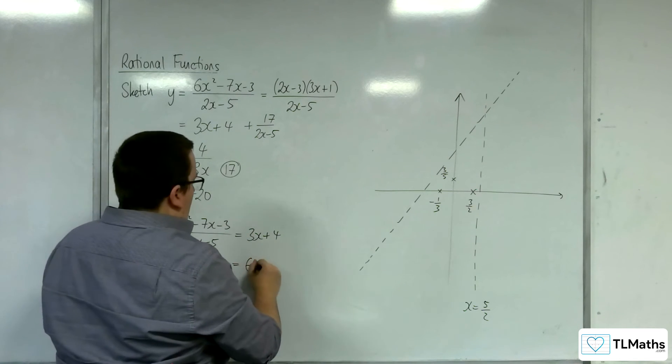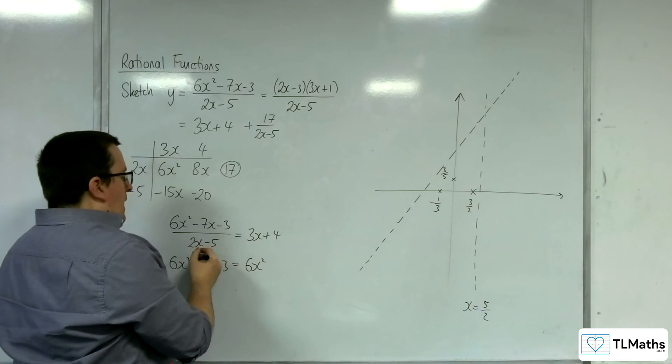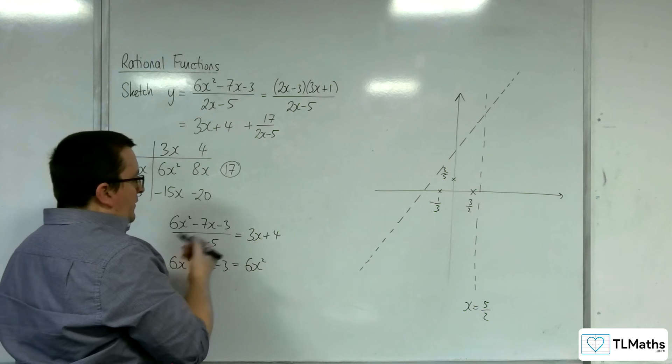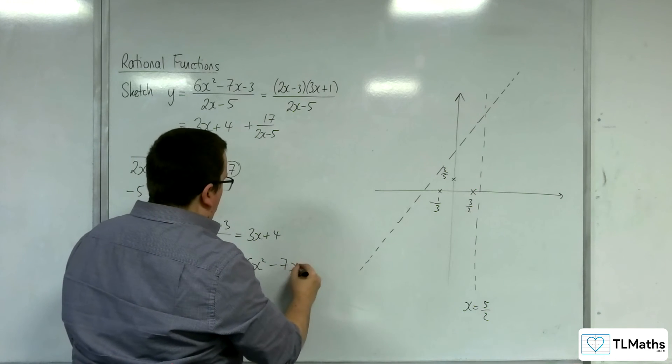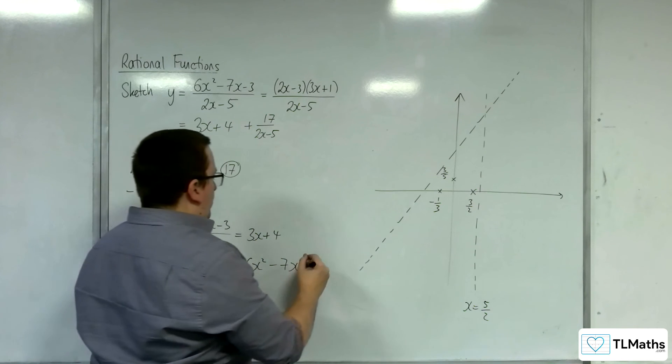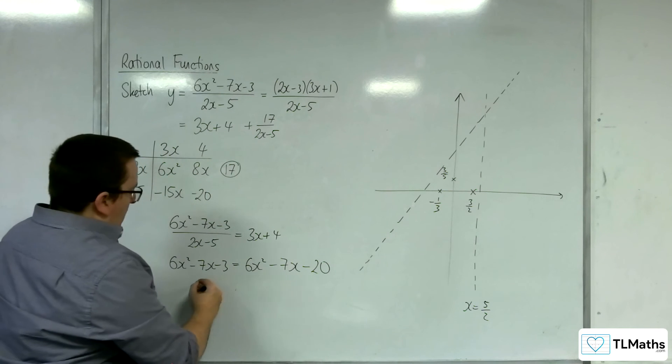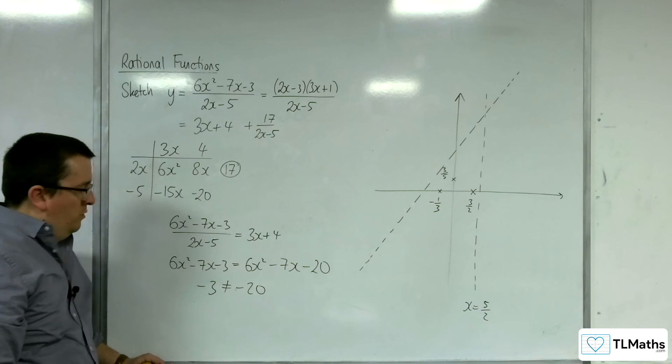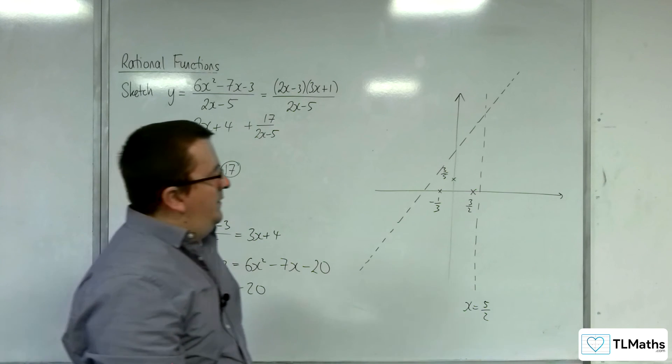We get 6x². We get 8x - 15x, so -7x. And we get -5 times 4, so -20. So we get -3 = -20, which clearly isn't true. So they don't intersect.